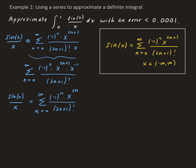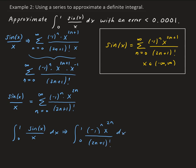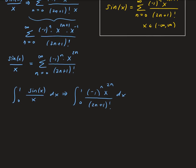So now we can go ahead and take the integral of this. We're going to integrate the series for sine x over x with respect to x. So integrating this — and we need to make sure the sum is included — we have the sum of minus 1 to the n times x to the 2n divided by 2n plus 1 factorial.